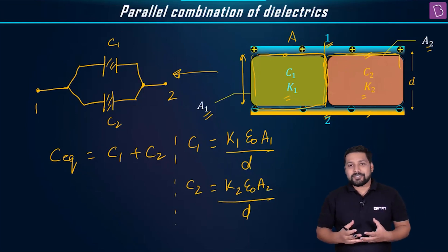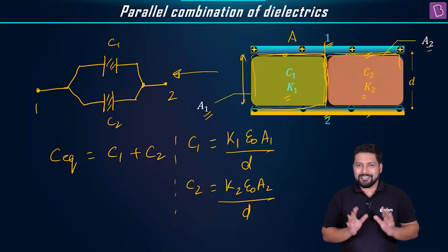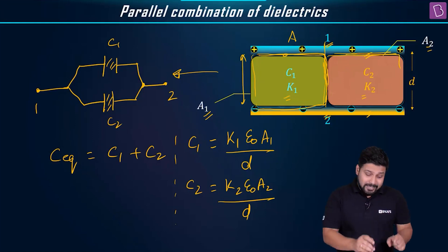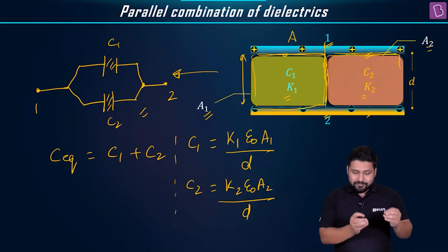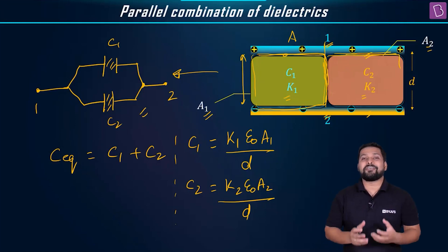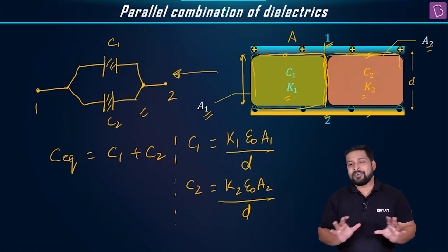In case when you are placing the dielectric slab like this, which is perpendicular to the plates, then what kind of combination are you getting? You are getting a parallel combination. The idea is to identify this and replace it with a circuit like this. This is what you need to learn. Once you have done this, it's all about writing the formula of capacitance and then plugging in the C equivalent formula. It's all done and dusted.